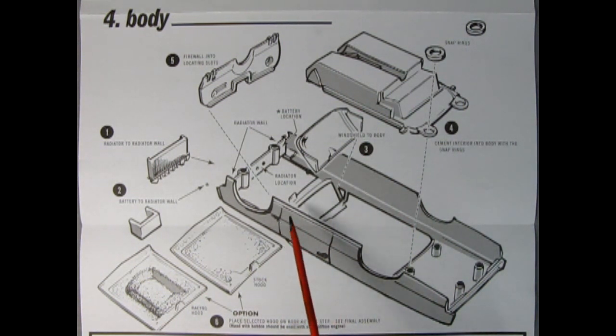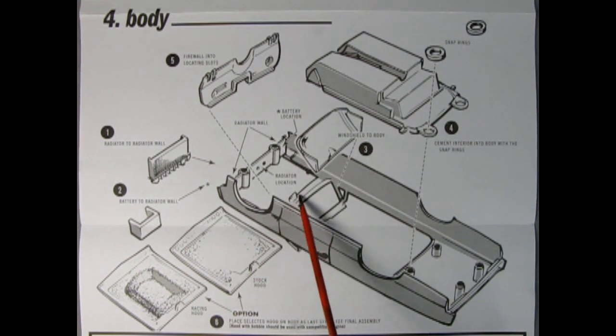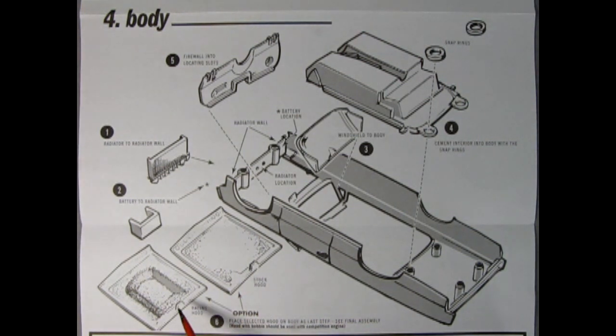And then we get the option of our stock hood or the racing hood. One thing you might notice here are these tabs that are sticking up, one on the body as well as one on the stock or the racing hood. And back in the day, AMT used to have a metal clip loop that you would put the hood in here and then attach the clip hook onto both ends of these tabs that are sticking up.